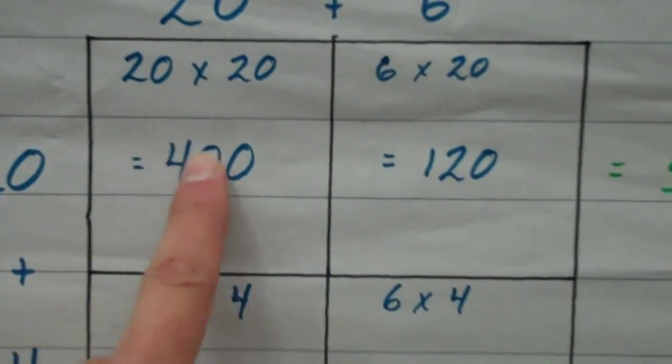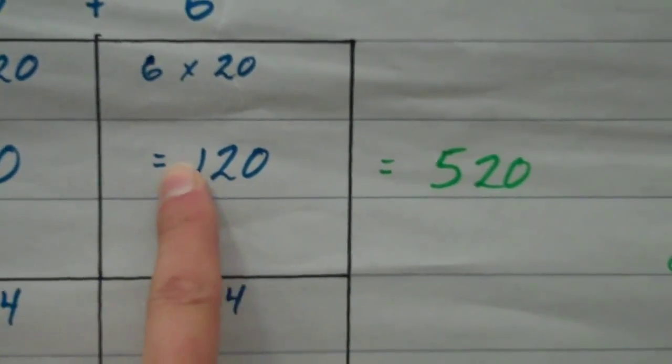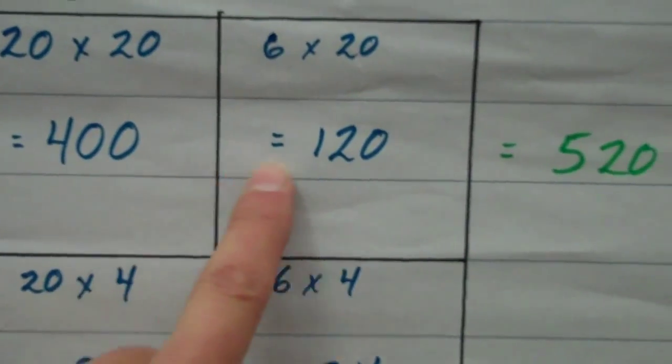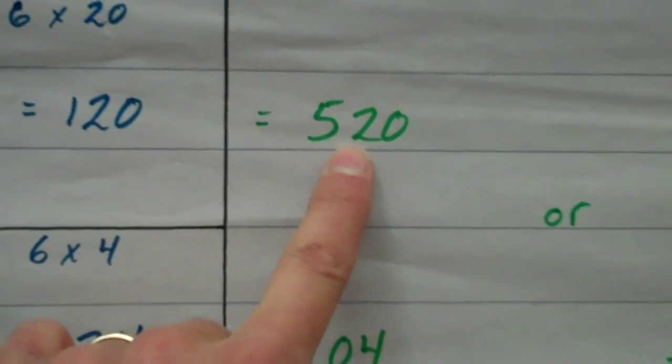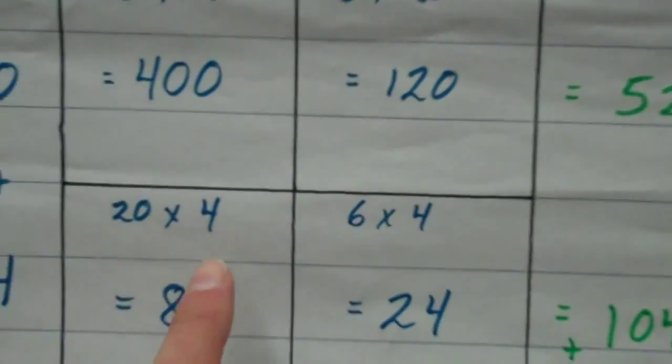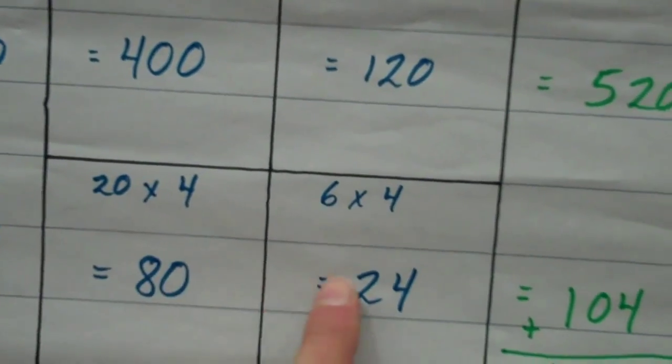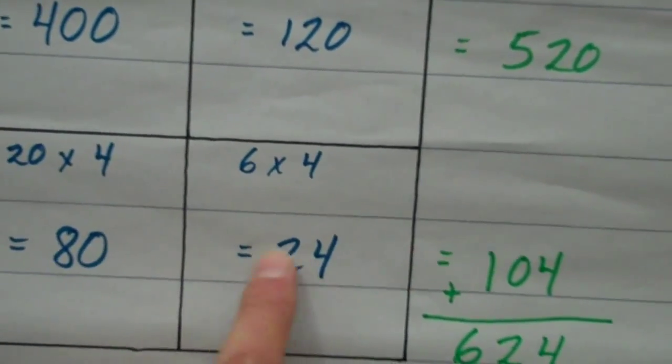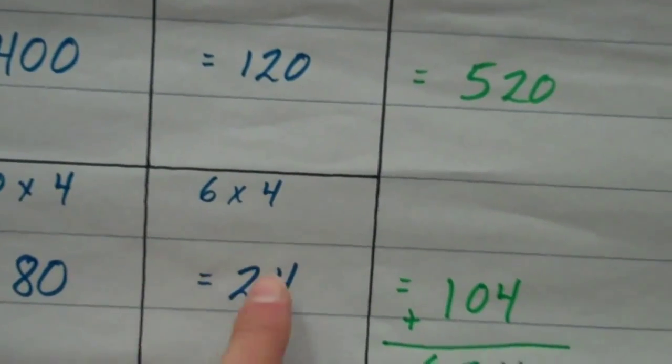What I did originally, though, is I simply took these two squares here and added those two up. 400 plus 120 equals 520. That leaves these two. These two numbers, 80 and 24.